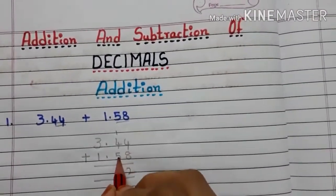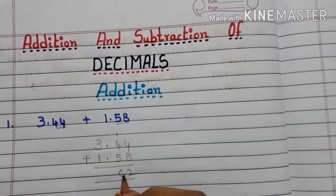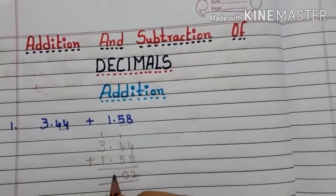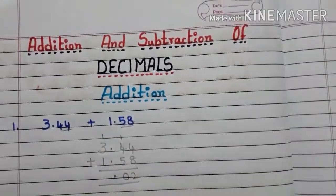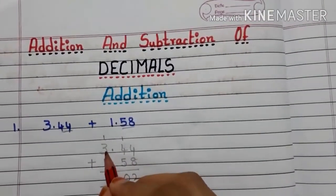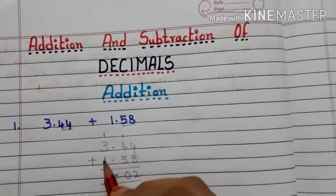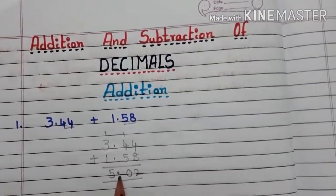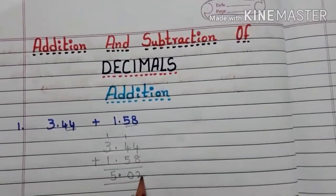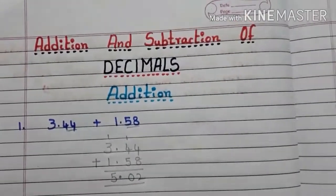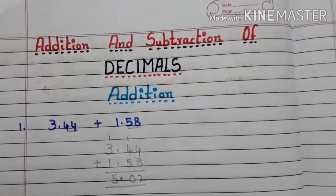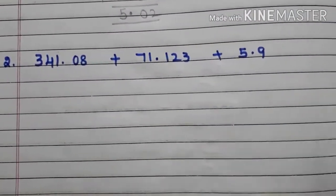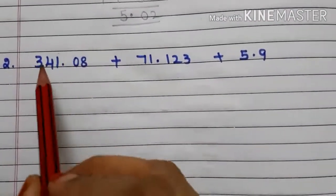Now add: 4 plus 8 is 12, write 2 carry 1. 4 plus 5 is 9, plus 1 is 10, write 0 carry 1. Place the decimal. 1 plus 3 is 4, 4 plus 1 is 5. So the answer is 5.02.